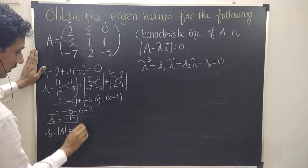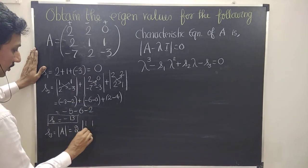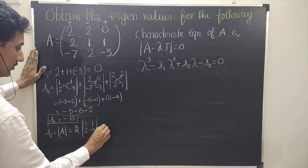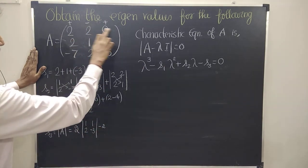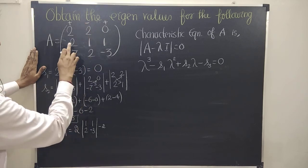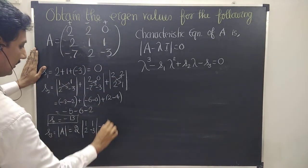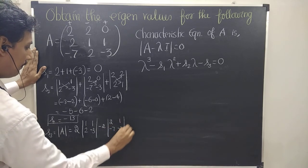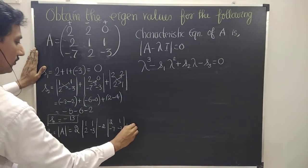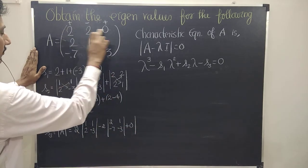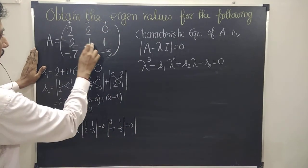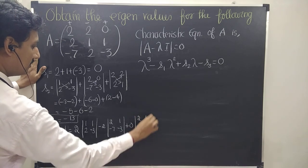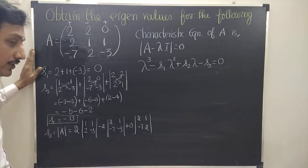If you don't understand, we can expand via the first row. Plus, minus, plus — same row only. We can expand via the first row: 2 into the minor (1, 1, 2, minus 3), minus 2 into the minor with the middle column eliminated (2, 1, minus 7, minus 3), plus 0 times the minor with the third column eliminated (2, 1, minus 7, 2). This is the way to get the determinant.